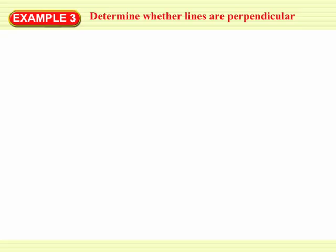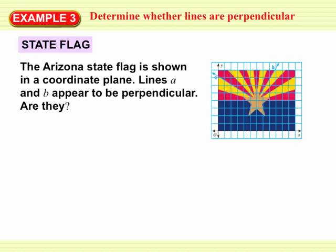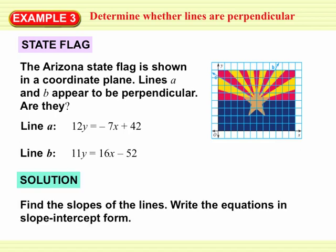A question you might see on a test: determine whether two lines are perpendicular. Here's a picture of the Arizona state flag with two lines, line A and line B, radiating out from the star. If you eyeball it, they might look perpendicular, but it's hard to tell, so we'll use math to decide. Line A has the equation 12y equals negative 7x plus 42, and line B has the equation 11y equals 16x minus 52. To decide, we need to find the slopes of both lines.